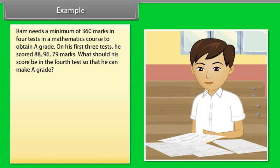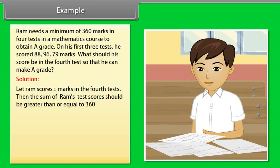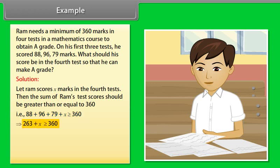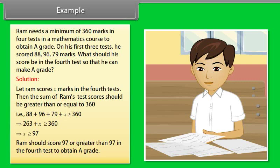Example: Ram needs a minimum of 360 marks in 4 tests in a mathematics course to obtain an A grade. On his first 3 tests, he scored 88, 96, and 79 marks. What should his score be in the 4th test so that he can make an A grade? Solution: Let Ram score x marks in the 4th test. Then 88 + 96 + 79 + x ≥ 360, which implies 263 + x ≥ 360, which implies x ≥ 97. Ram should score 97 or greater than 97 in the 4th test to obtain an A grade.